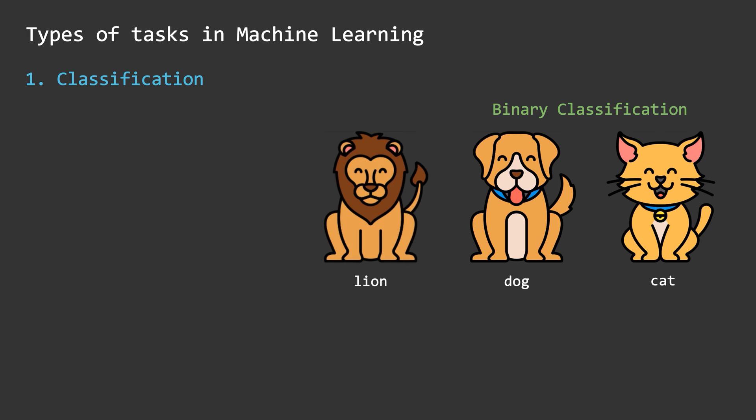Suppose if we also had images of lions in our data and our task would have been to categorize images into cat, dog, or lion categories. Classification tasks involving more than two categories are known as multi-class classification problems.